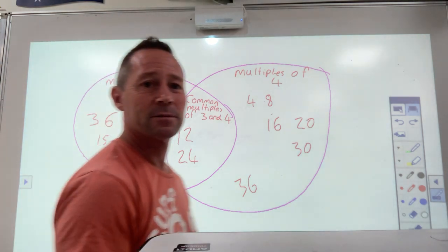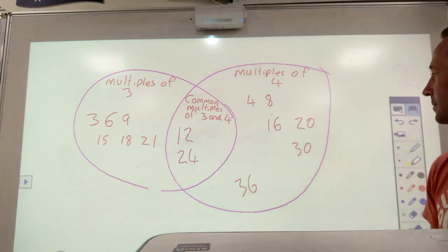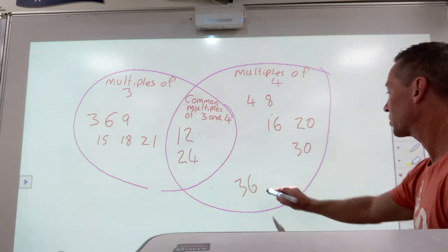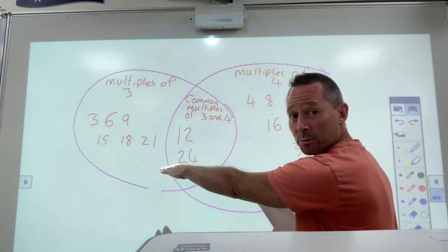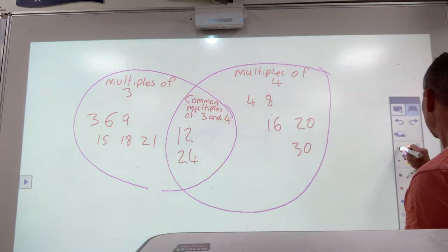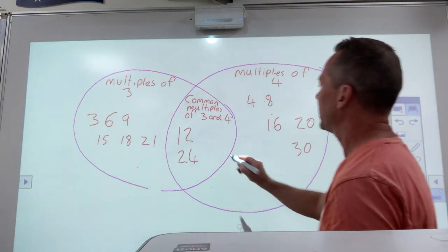12. 12, so the 12 here, 12 here. Any other ones? 24. 24, 24. So what you do there, you won't leave them here, you move 12 and 24 into here, in which case now I just brought them around from there.